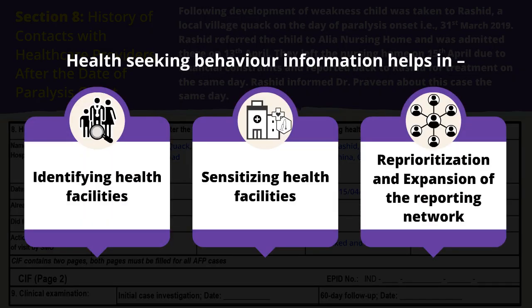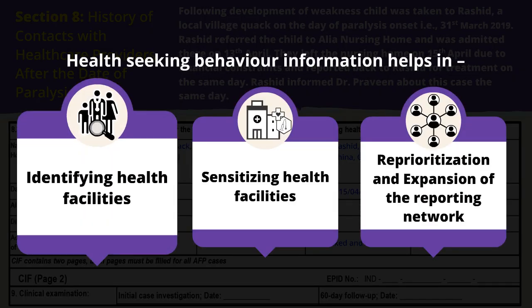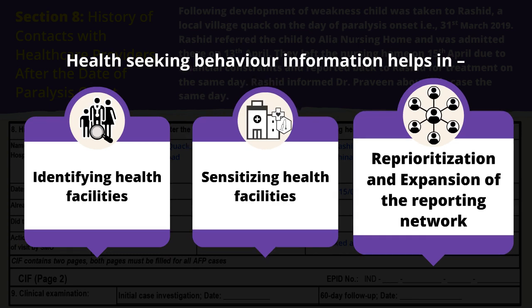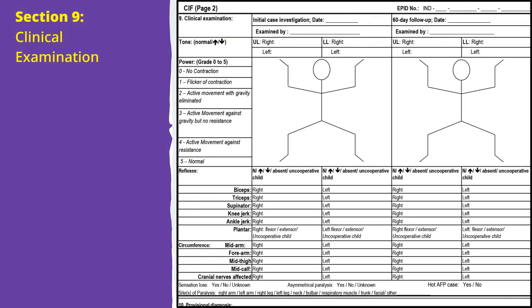The help-seeking behaviour information helps in identification of all health facilities which a suspected case may have visited. This information helps in sensitization of health facilities for timely notification of suspected cases, as well as reprioritization and expansion of the reporting network. Section 9 is on clinical examination.